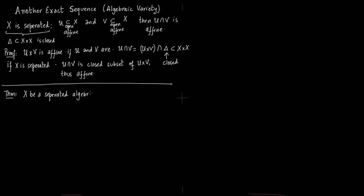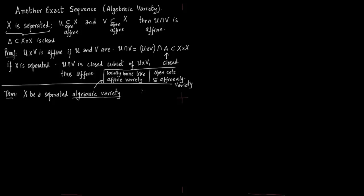The theorem we are primarily concerned with is this. Say X is a separated algebraic variety with some open cover. Recall that an algebraic variety locally looks like an affine variety — any open set of an algebraic variety looks like an affine algebraic variety. Keep Corollary 2.6 on page 120 of Perrin in mind, which we want to use. So you have an open cover {U_i} of X.